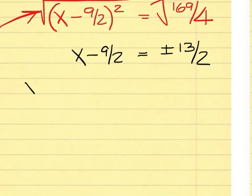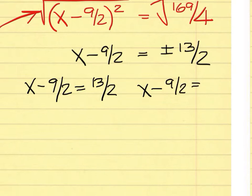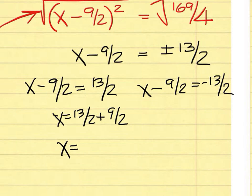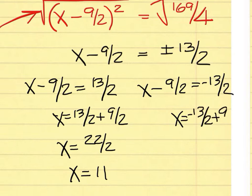Now we have x minus 9 over 2 equals 13 over 2, and x minus 9 over 2 equals negative 13 over 2. So 13 over 2 plus 9 over 2 is 22 over 2, which is going to be 11. And then negative 13 over 2 plus 9 over 2 is going to be negative 4 over 2.